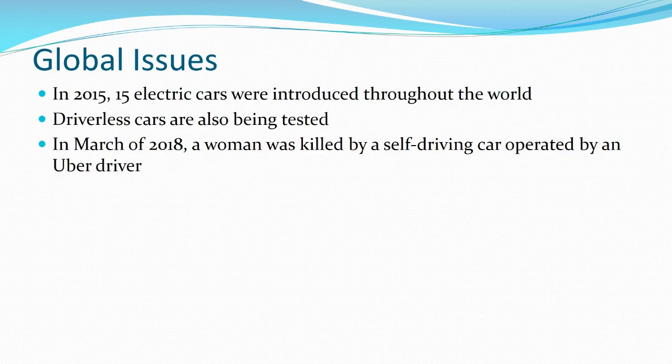Global issues in quality management now include automation and driverless cars. In 2018, a self-driving car hit and killed somebody. There's argument about whether that was a quality problem — did the system do what it was supposed to do? Or was it bad system design, because the system had never been designed to accommodate pedestrians? In that regard, it may not have been a quality issue — the system was operating as it was supposed to — but perhaps the initial requirements were not well thought out in the first place.